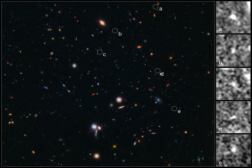Small aggregates of galaxies are referred to as galaxy groups rather than clusters of galaxies. Galaxy groups and clusters can themselves cluster together to form superclusters.